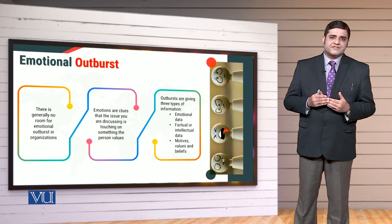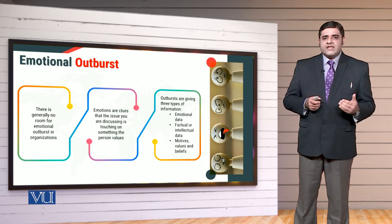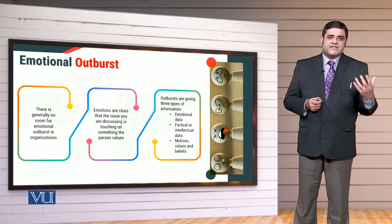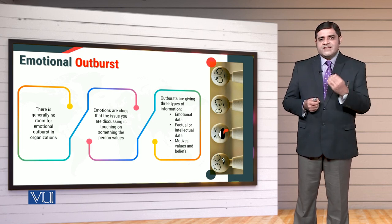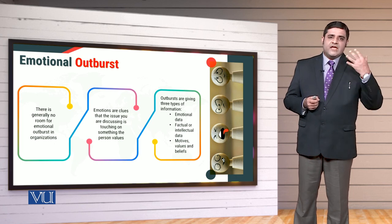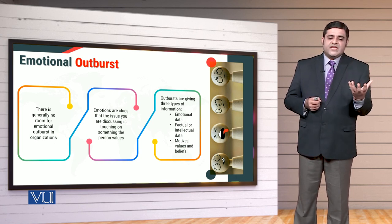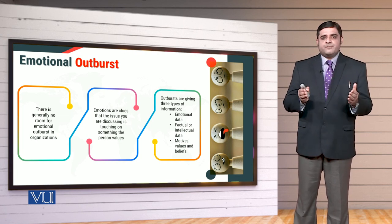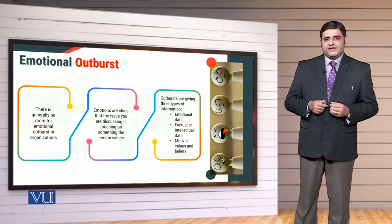The second important thing is ke apko yeh dekhna hoga ke what are the aspects which can be the touchy triggers for the people. Wo kaunse aspects hain jin ko madde nazar humeh rakh kar logon ko control kar sakein hain. Kaunse kaunse unke sensitive issues hain, kahan kahan par they become more emotionally involved. Or yeh tamam cheezein hain hemare liye analyze karna, visualize karna, being a leader wo bohut ke zariye hi hem apne employees ko behtar taur par guide or train kar sakein hain.